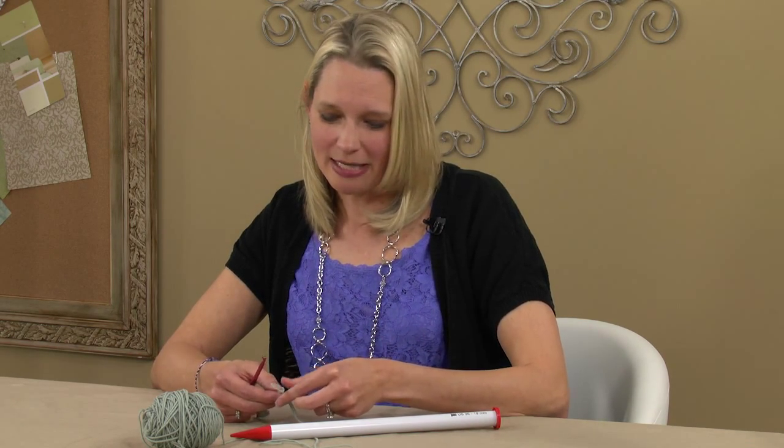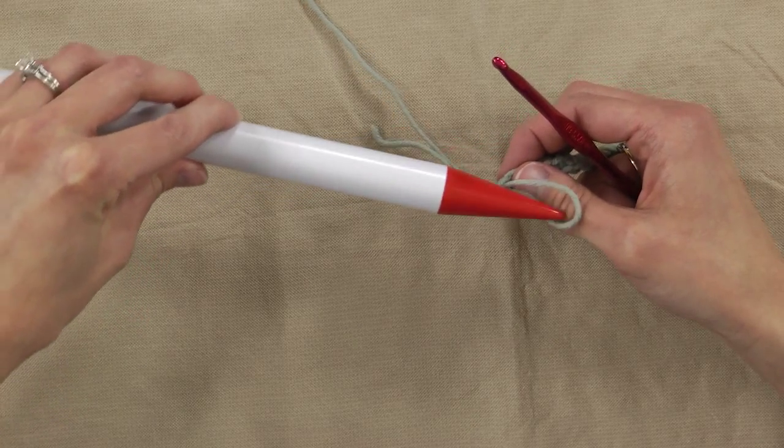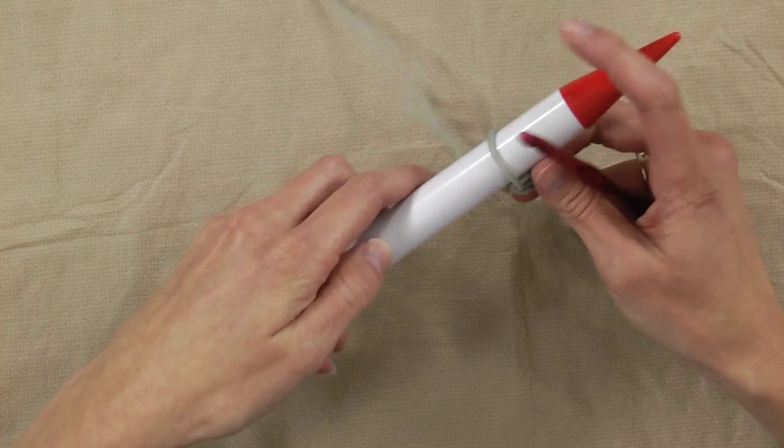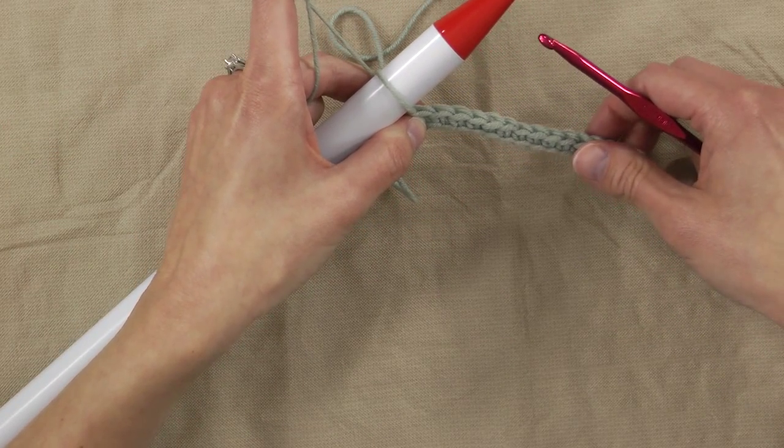So I've removed my hook from the last loop of my single crochet row of 16 single crochets, and that's where my needle is going to go, right in that abandoned loop. Gently snug it up, and this is how broomstick lace is made.